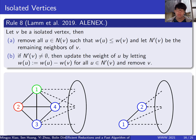The last rule is about isolated vertices. A vertex is said to be isolated if its neighborhood forms a clique. The figure is an illustration of this rule.